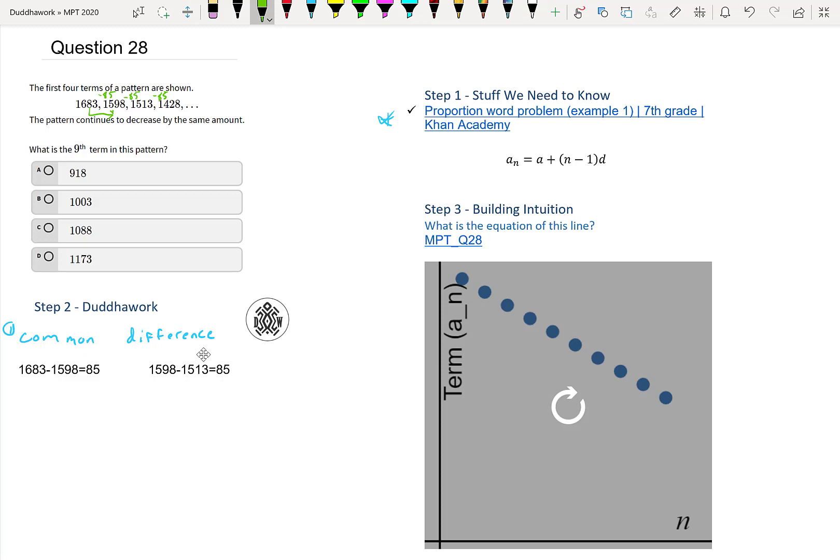So turns out the formula is this. And it should make sense a little bit. This is the nth term. A is the first term. So that's just the index, like which term you're at. And then that's the common difference.